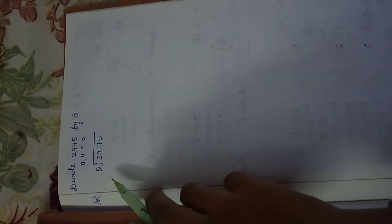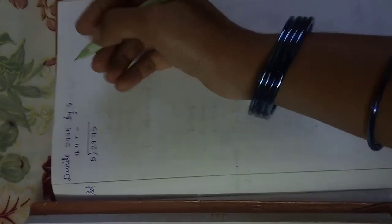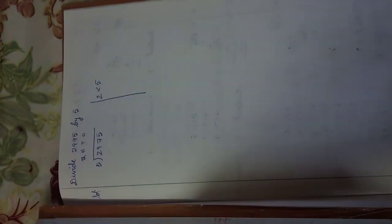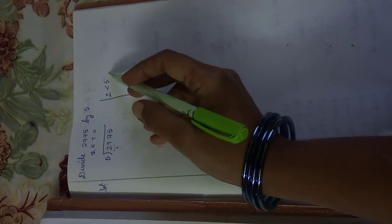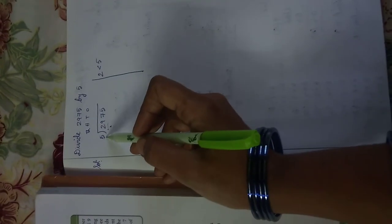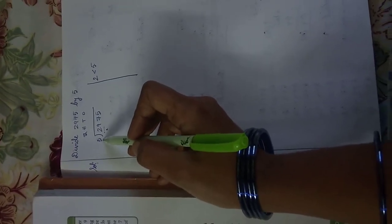Okay students, here divide 2975 by 5. Here's the solution. What is the number in the thousands place? 2. So 2 is less than 5. We consider 29 because 2 is less than 5, so we consider the number formed by the first two digits, 2 and 9, of the dividend.